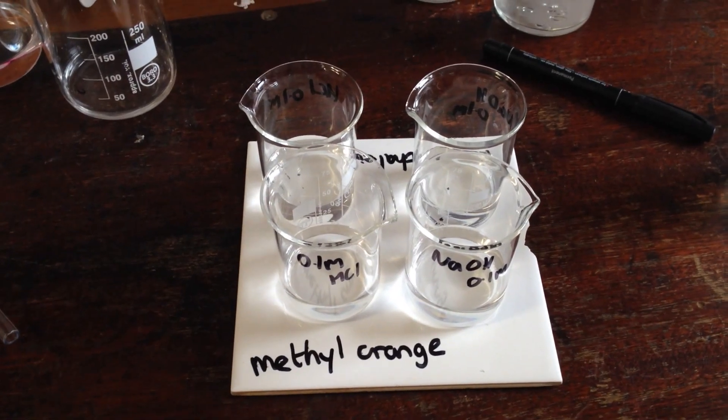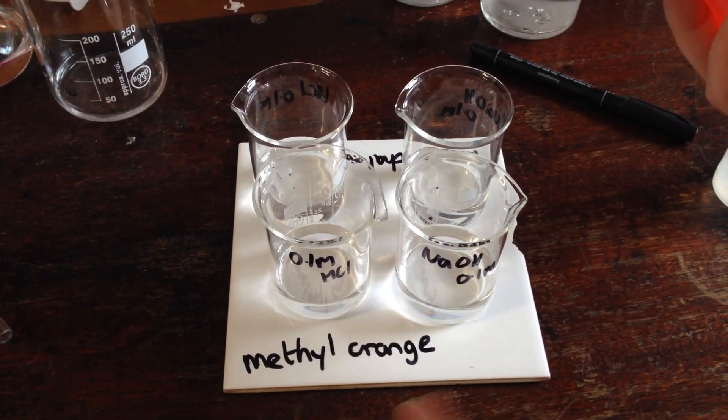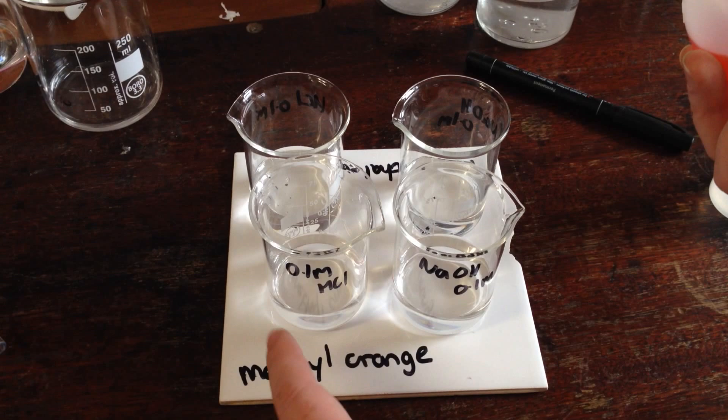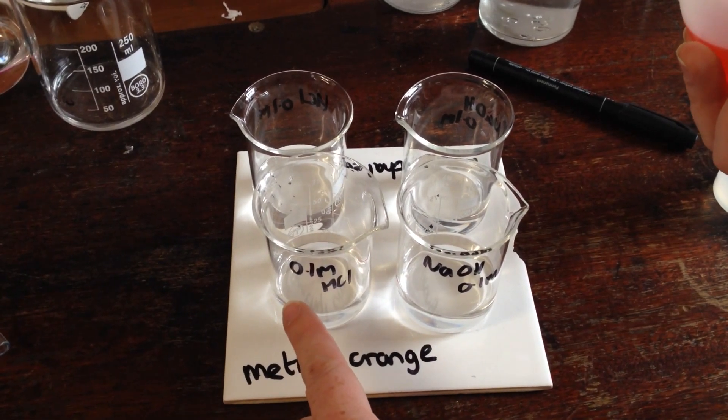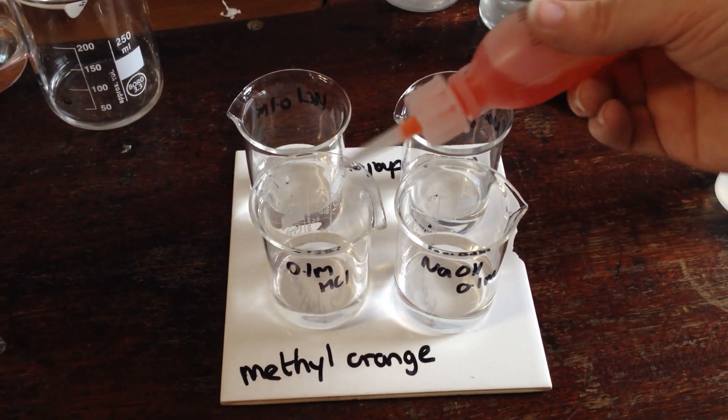Here I'm going to show you what different indicators look like in acid and alkaline. We start with methyl orange, and we have 0.1 molar hydrochloric acid and sodium hydroxide.